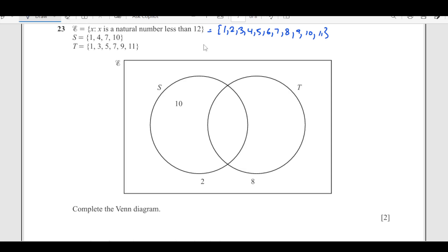First, this is the common part of S and T. Let's see what's common: 1 and 7. We'll put 1 and 7 in the intersection. For S, we have 4 remaining. For T, we write 3, 5, 9, and 11. Now what's left? Going through: 1 is there, 2 is gone, 3 is there, 4 is there, 5 is there, 6 is not there. So 6 goes outside. The rest are accounted for. We've completed the Venn diagram.